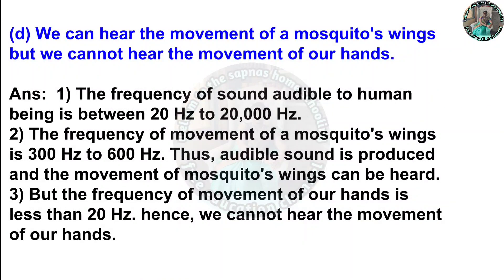(d) We can hear the movement of a mosquito's wings but we cannot hear the movement of our hand. Answer: The frequency of sound audible to human beings is between 20 Hertz to 20,000 Hertz. The frequency of movement of a mosquito's wing is 300 Hertz to 600 Hertz, which is audible sound, so it can be heard. But the frequency of movement of a hand is less than 20 Hertz, and hence we cannot hear the movement of our hands.